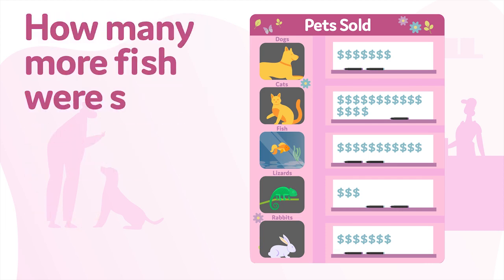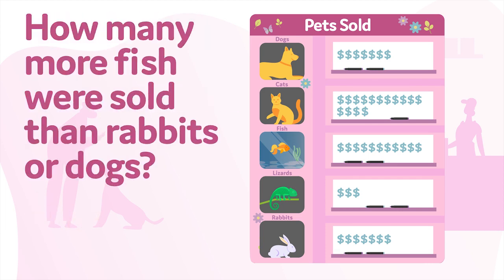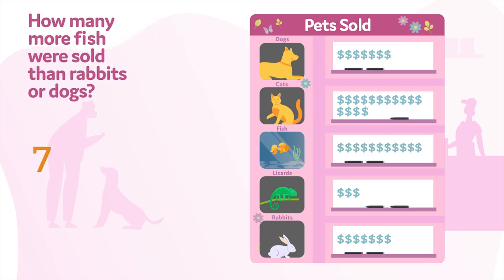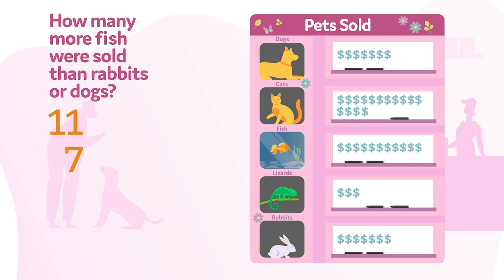How many more fish were sold than rabbits or dogs? Count the fish: one, two, three, four, five, six, seven, eight, nine, ten, eleven. The number of rabbits or dogs is seven. To find the difference, subtract eleven minus seven. The answer is four — four more fish were sold than rabbits or dogs.